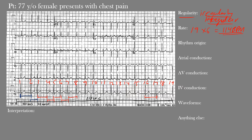Now, how about the rhythm origin? We have narrow QRS complexes, so it must be a supraventricular rhythm, meaning it's originating above the ventricles. However, you can't really make out any P waves here, so it's certainly not a sinus rhythm. It must be coming from somewhere within the atrium. With ventricular rhythms we usually see wide QRS complexes, but here the narrow complexes confirm the rhythm origin is likely from the atrium.